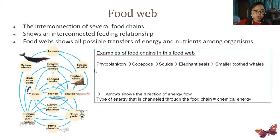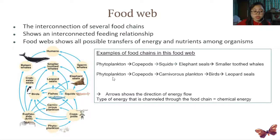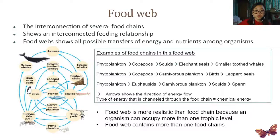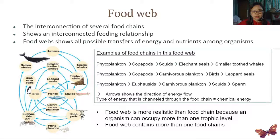For example, one food chain: phytoplankton → copepods → squids → elephant seals → smaller toothed whales. A second food chain: phytoplankton → copepods → carnivorous plankton → birds → leopard seals. Another example: phytoplankton → euphausiids → carnivorous plankton → squids → sperm whales. Those are just three of the many food chains you can construct from one food web. Food webs are more realistic than food chains because an organism can occupy more than one trophic level, and food webs reflect what actually happens in nature.